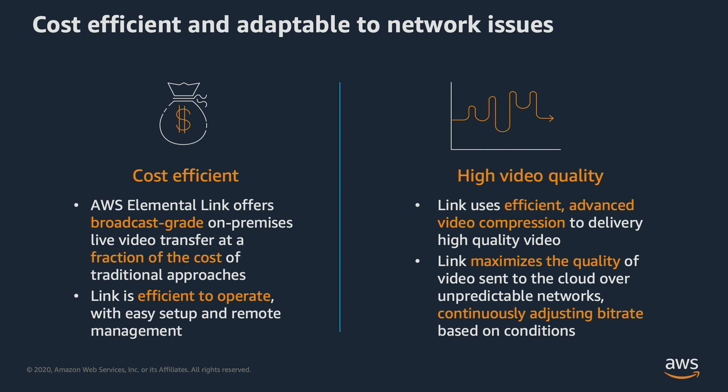AWS Elemental Link is cost efficient. It offers broadcast-grade on-premise live video transfer at a fraction of the cost of traditional approaches. Link is efficient to operate, running an efficient AWS cloud service. It uses advanced video compression to deliver high-quality video, and maximizes the quality sent over the cloud over unpredictable networks, continually adjusting bitrate based on conditions.